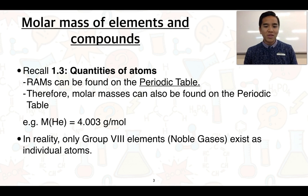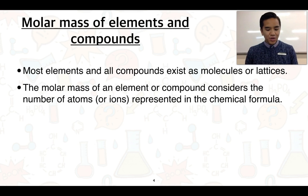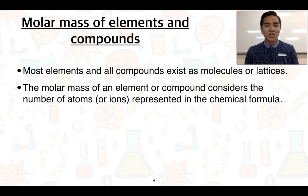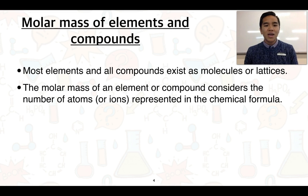We do know that most elements and all compounds exist as molecules or lattices. The molar mass of an element or a compound considers the numbers of atoms or ions that are represented in a chemical formula.